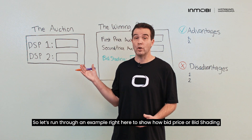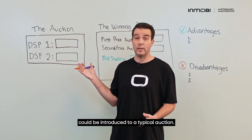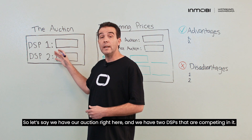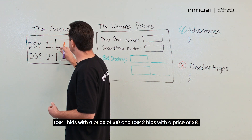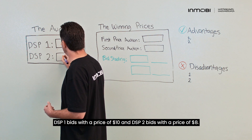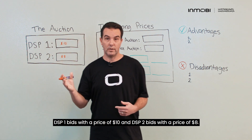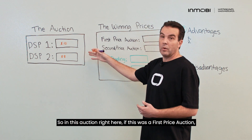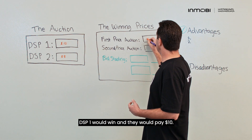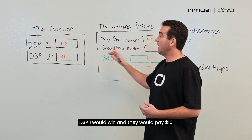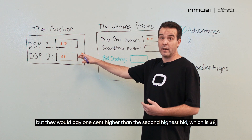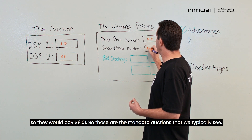Let's run through an example to show how bid shading could be introduced in a typical auction. We have two DSPs competing: DSP1 bids $10 and DSP2 bids $8. In a first price auction, DSP1 would win and pay $10. In a second price auction, DSP1 would also win but pay one cent higher than the second highest bid — so they would pay $8.01.